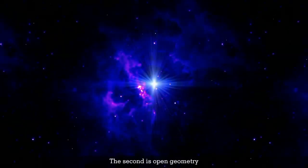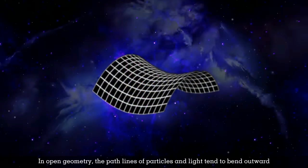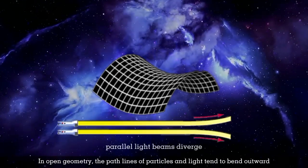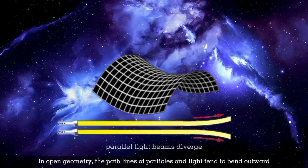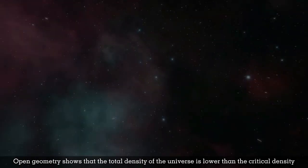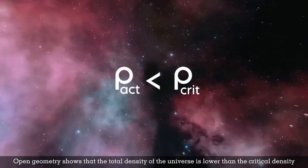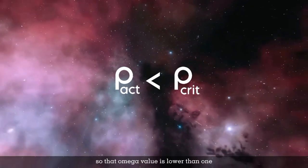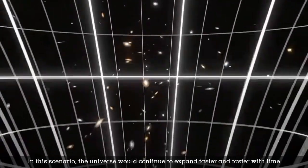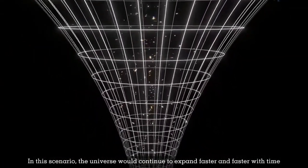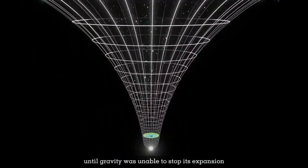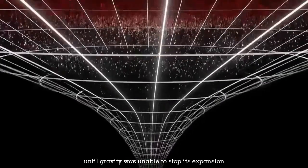The second is open geometry. In open geometry, the path lines of particles and light tend to bend outward. Open geometry shows that the total density of the universe is lower than the critical density, so that the omega value is less than 1. In this scenario, the universe would continue to expand faster and faster with time, until gravity was unable to stop its expansion.